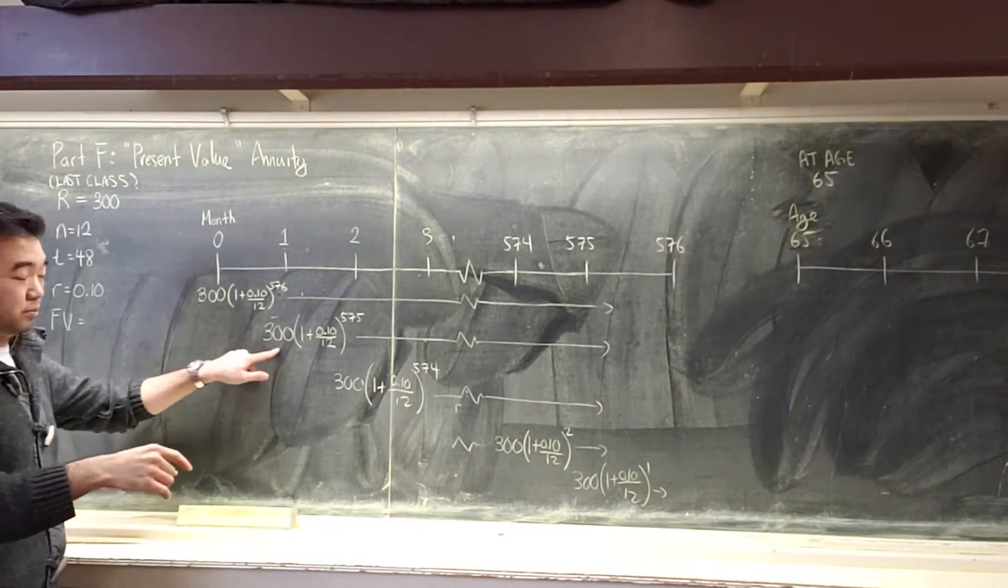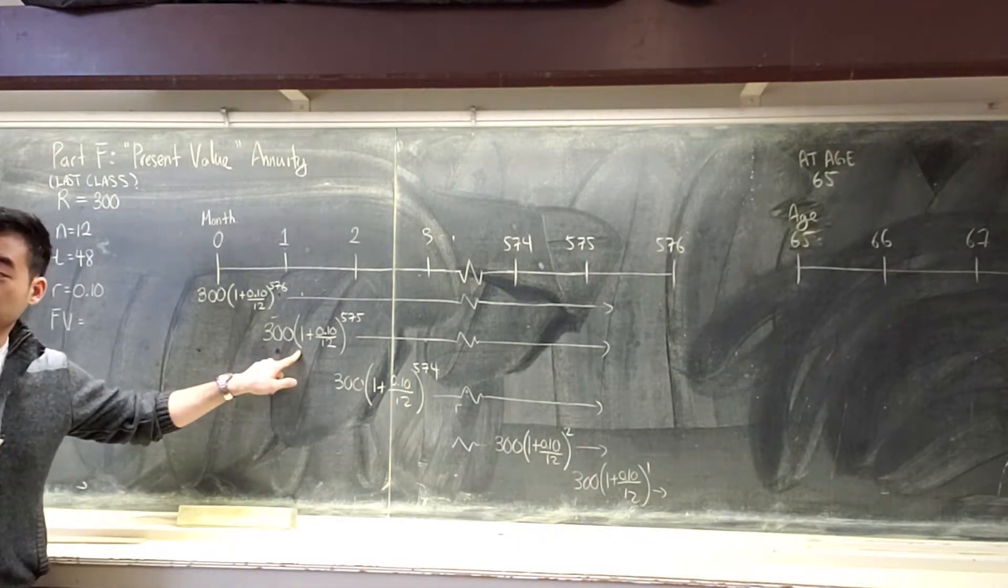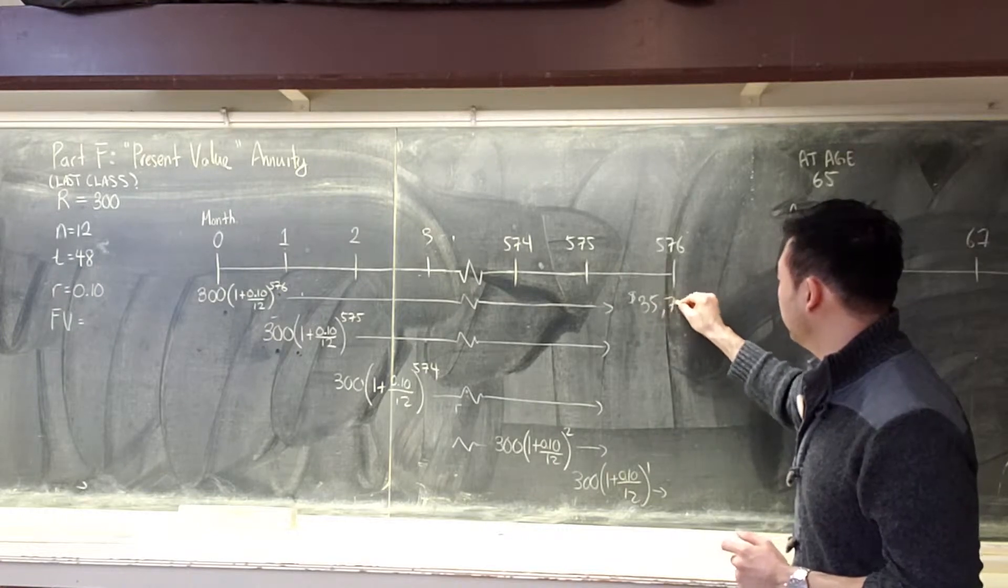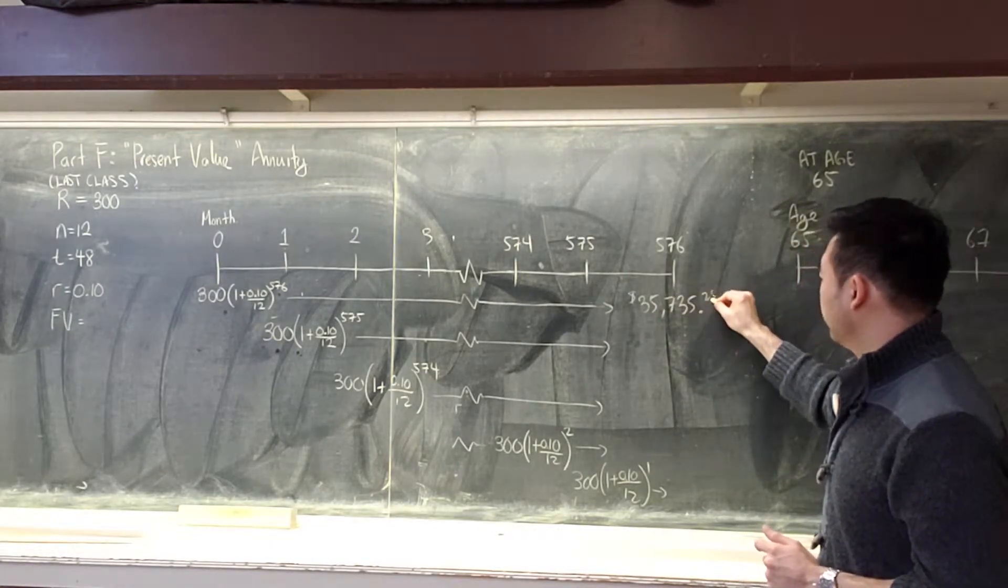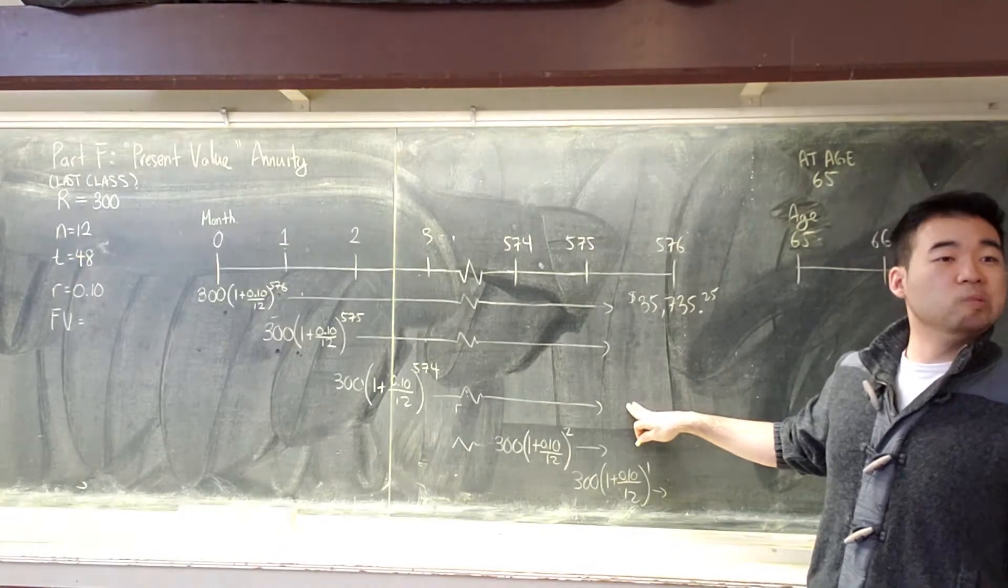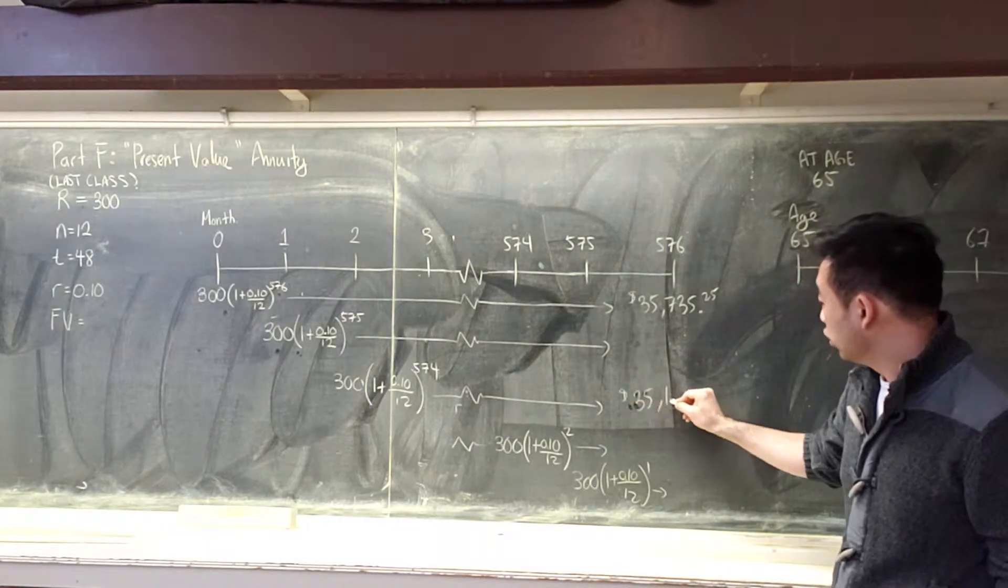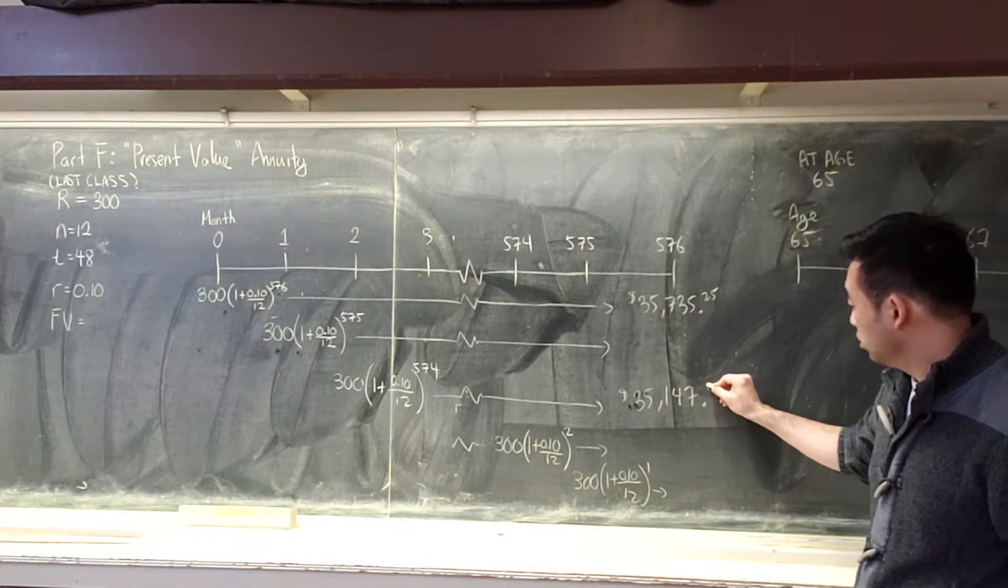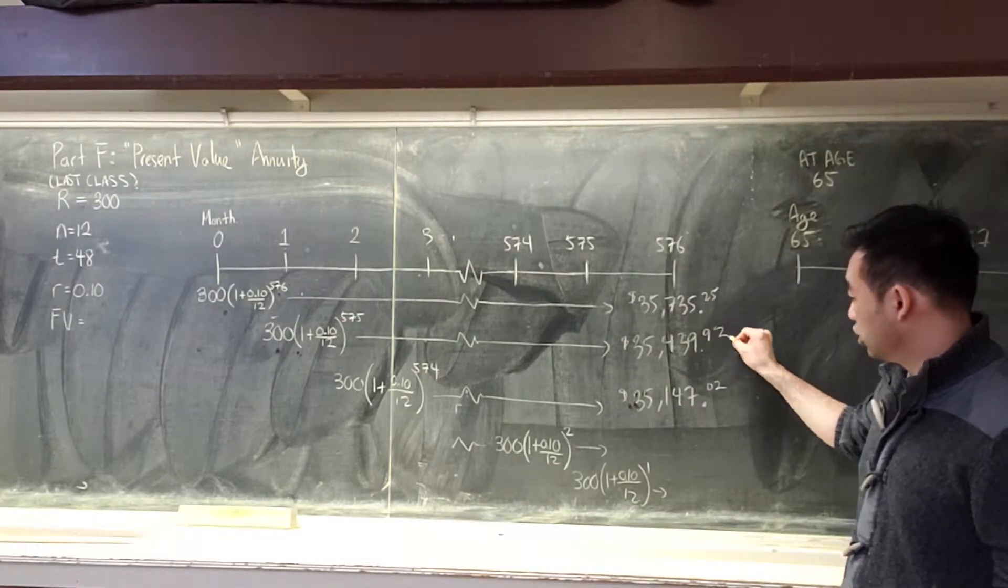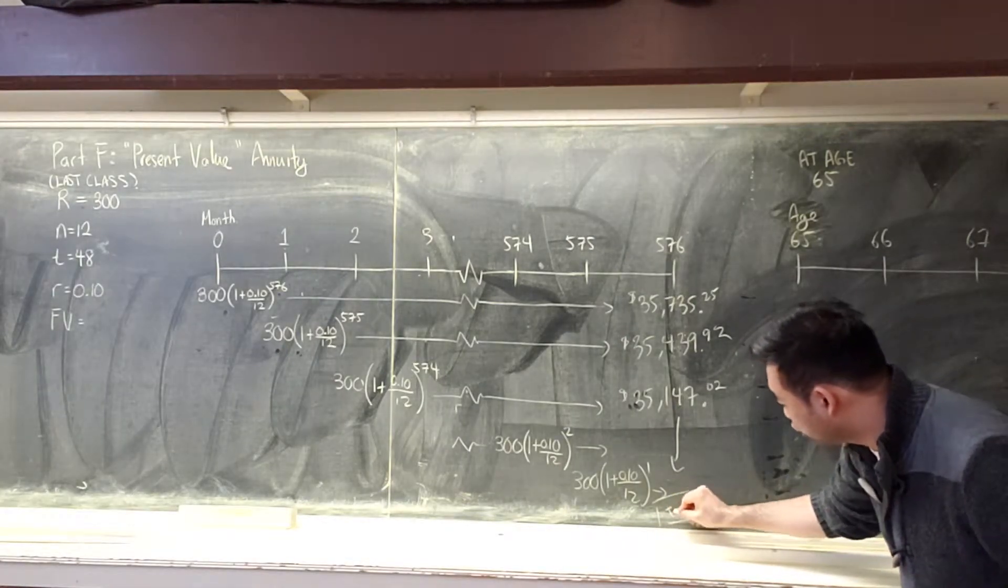The first one. Can you just quickly do the second one for me? Michaela, the first one. Go ahead. $35,735.25. We'll wait on Ethan. Did I ask someone to do the third one? Can you do that for me? $35,147.02. And Ethan? $35,439.79.02. And I do this 576 times until I get my future value.